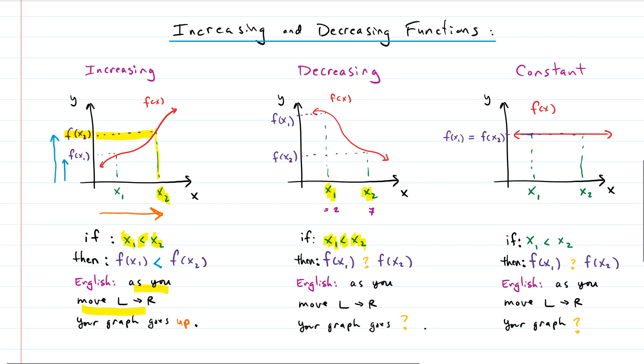So x1 is to the left of x2. If we looked at their associated y values, there's the y value for x1 and here's the y value for x2. How do their y values relate? How do they compare? Well, if we looked at them, we would say that f of x1 was bigger than f of x2, because it is. That's higher than this is.